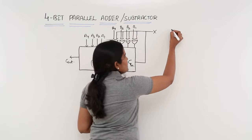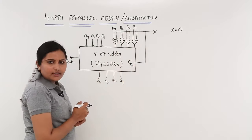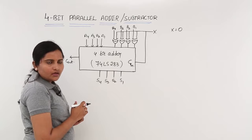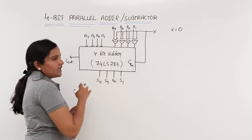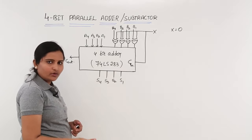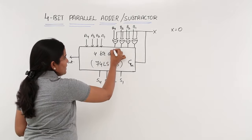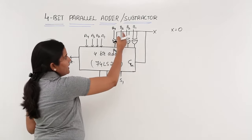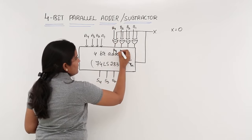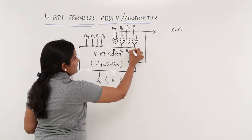For example, if X is equal to 0, you are providing 0 to all XOR gates as one input. Now, 0 XOR with anything gives the same thing — so 0 XOR with B4 gives B4, 0 XOR with B3 gives B3, 0 XOR with B2 gives B2, and 0 XOR with B1 gives B1.